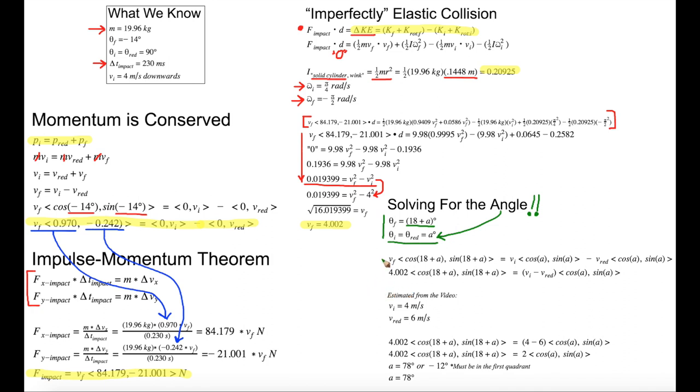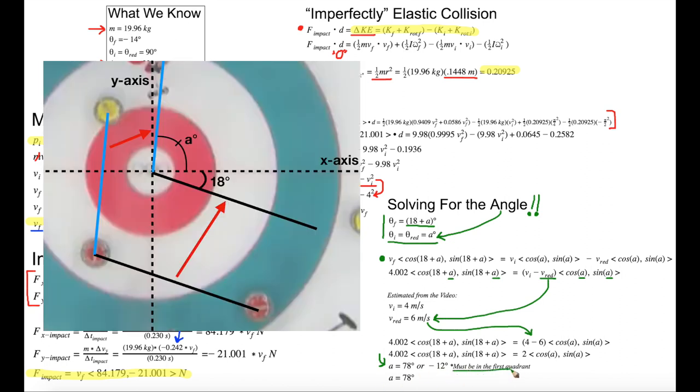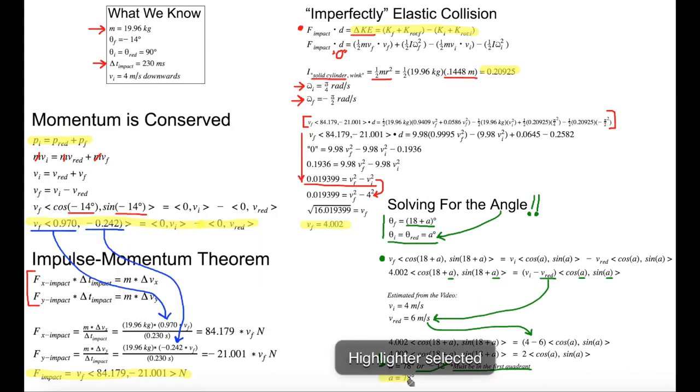Now we can go to this equation based on the conservation of momentum and plug in our numbers. We still have two unknowns, V red and A, but since we're trying to solve for A, we estimated V red from the video to be 6 meters per second. Plugging this equation into the calculator, we get two angles, 78 and negative 12 degrees. Based on the picture, we see that the angle has to be in quadrant one, so we know that A equals 78 degrees. Thus, the sweepers can stop sweeping when the rock is 78 degrees from the x-axis.